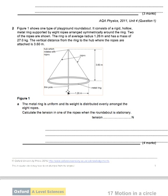Question 2: Figure 1 shows one type of playground roundabout. It consists of a rigid hollow metal ring supported by eight ropes arranged symmetrically around the ring. The ring is of average radius 1.26 meters and has a mass of 27.0 kilograms. The vertical distance from the ring to the hub where the ropes are attached is 3.60 meters. The metal ring is uniform and its weight is distributed evenly amongst the eight ropes. Calculate the tension in one of the ropes when the roundabout is stationary.